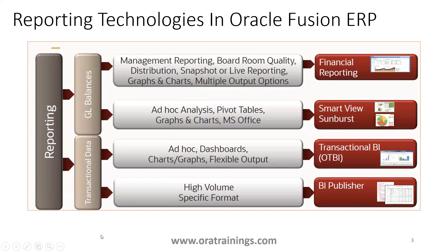These are the reporting technologies available. On a high level, they are grouped into four categories: Financial Reporting, Smart View and Sunburst, OTBI, and BI Publisher. Financial Reporting, FRC, Smart View, and Sunburst are based on GL balance cubes, while OTBI and BI Publisher are based on transactional table data.